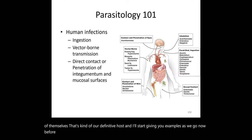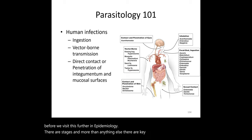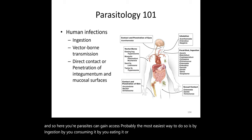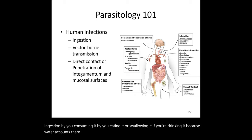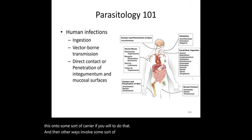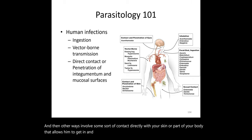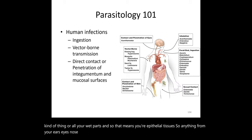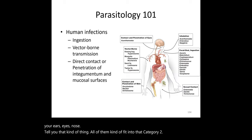Before going further, there are key entry points. Parasites can gain access most easily by ingestion—eating or swallowing them, including through water. Another common route is via a vector or carrier. Other routes involve direct contact with skin or epithelial tissues such as ears, eyes, nose, and genitalia.